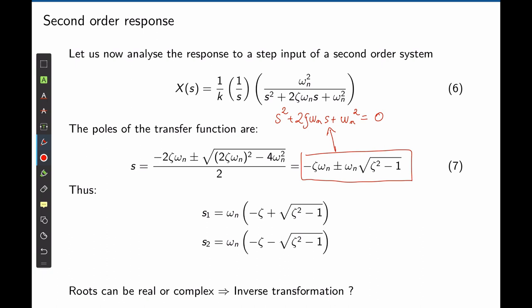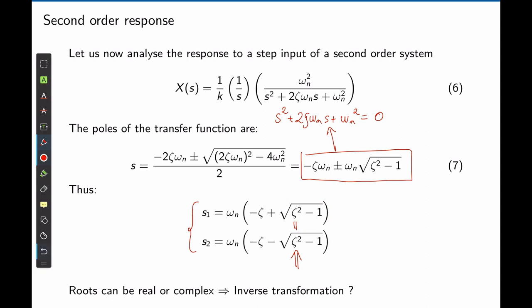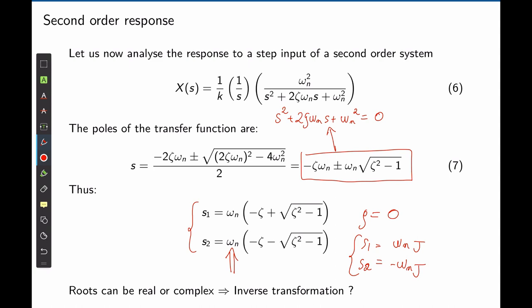If ζ > 1, the square root term yields a real number, so s₁ and s₂ are both real. If ζ < 1, the square root yields an imaginary number, giving complex poles. So depending on the damping ratio, the system may have only exponential waveforms or both exponential and sinusoidal waveforms. When ζ = 0, s₁ and s₂ are purely imaginary, located on the imaginary axis at frequency ωₙ. Thus, ωₙ represents the frequency of oscillations of the undamped system.